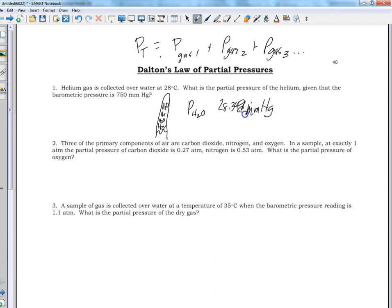We know the total pressure is 750, so 28.349 millimeters of mercury plus the pressure of the helium will give us 750 millimeters.